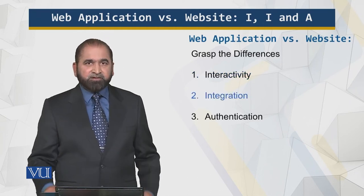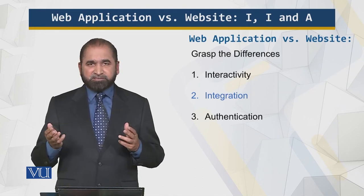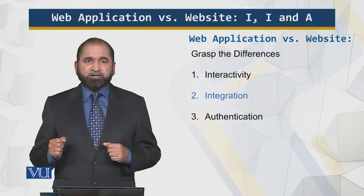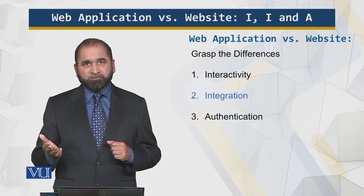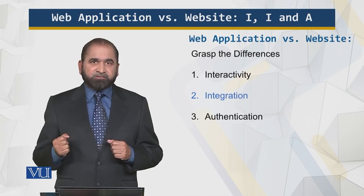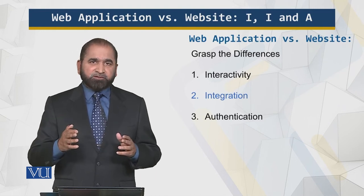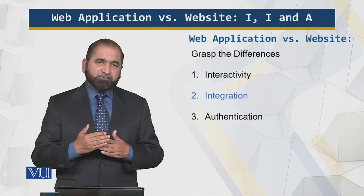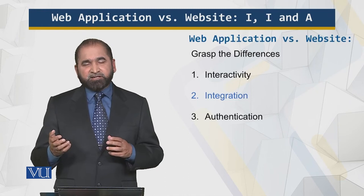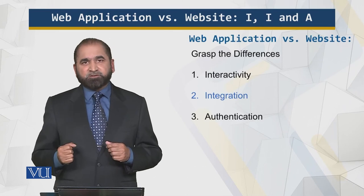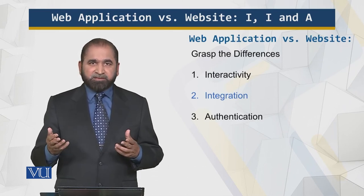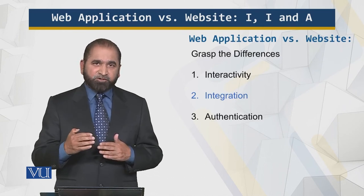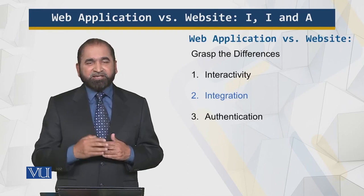The second aspect is integration, which means connecting other external systems to your web presence. For example, with a website I can connect a CRM system — customer relationship management — and also an ERP system — enterprise resource planning. I can do the same with a web application, but it is more important for a web application because it has to perform complex tasks. Connecting a CRM with an e-commerce system means transactional data and user feedback all flow into the CRM, increasing productivity and reducing processing time. Connecting a CRM to a website to deliver more relevant content is possible, but it is not the main requirement for a website.